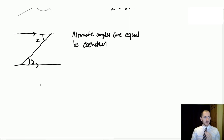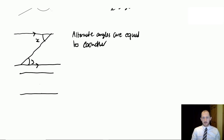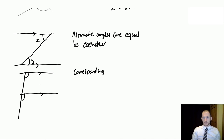You also need to use corresponding angles, also called F angles. If you have two parallel lines and another line crossing them, the corresponding angles are equal. If we call them x and y, then x is just equal to y.